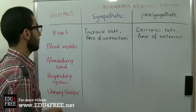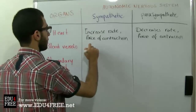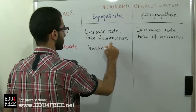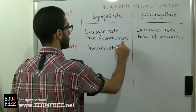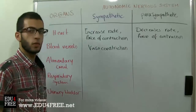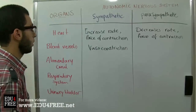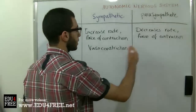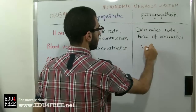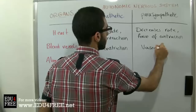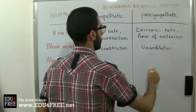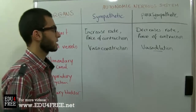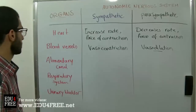Regarding blood vessels, the Sympathetic Nervous System causes vasoconstriction — that is, it increases the contraction of the walls of the blood vessels all over the body. On the other hand, the Parasympathetic Nervous System causes vasodilation, meaning the relaxation of the walls of the blood vessels.